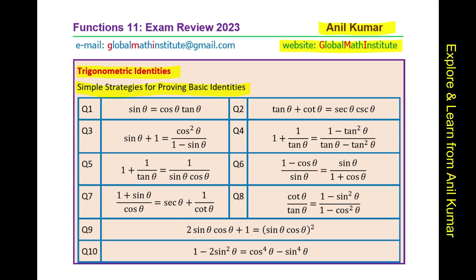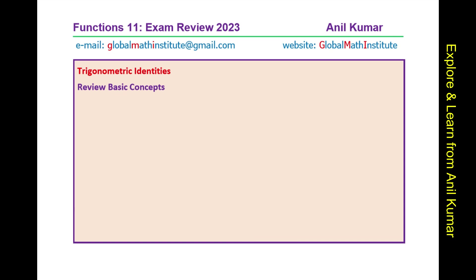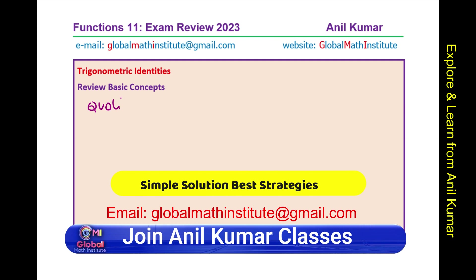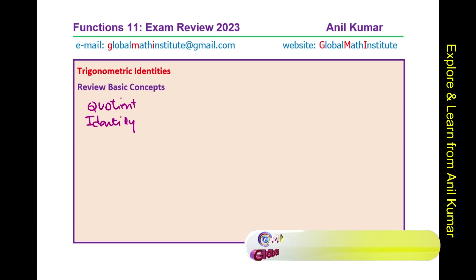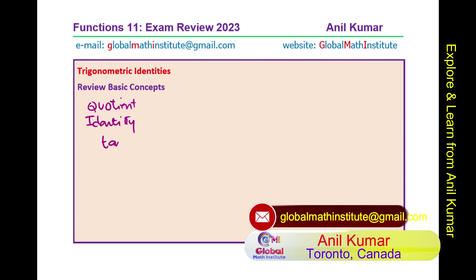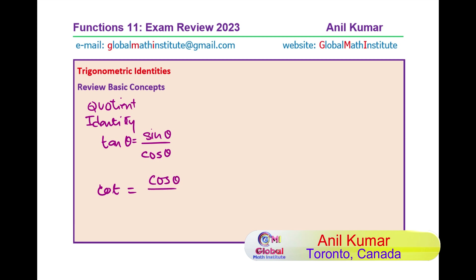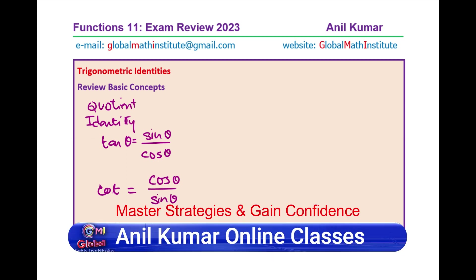Let us look into the strategies first. Let us review some very basic concepts which help us to prove identities. One of them is the quotient identity. The quotient identity is basically tan theta equals the quotient of sin theta and cos theta. Similarly, we could also write cotangent theta as the ratio of cos theta over sin theta. Of course, the denominator cannot be 0. This is one of the important identities.